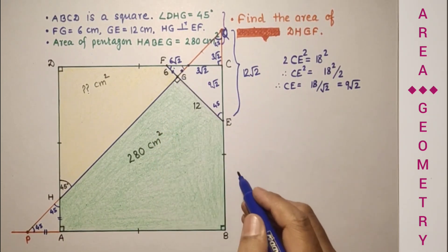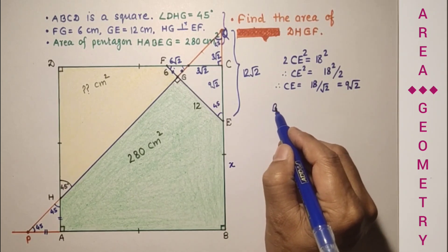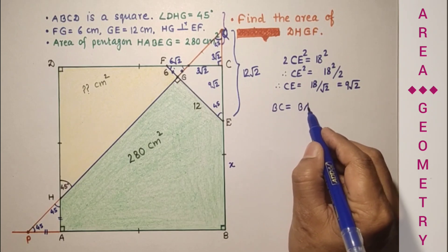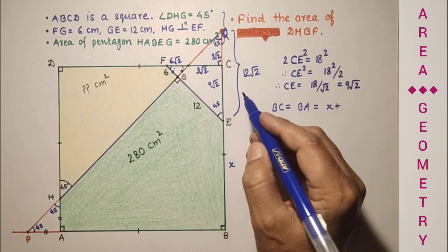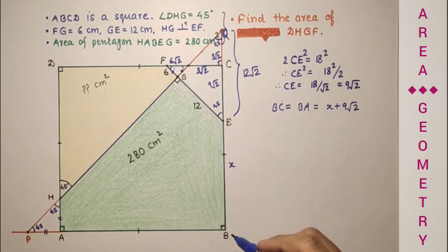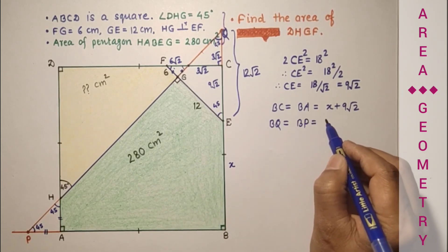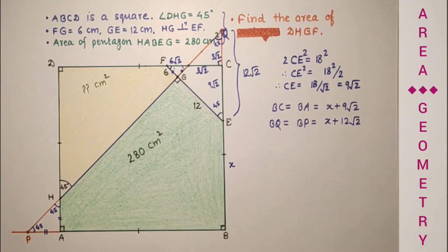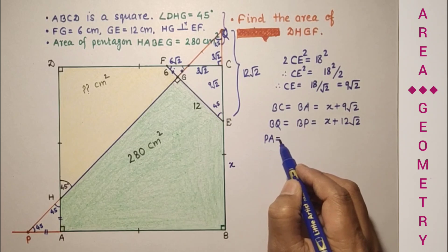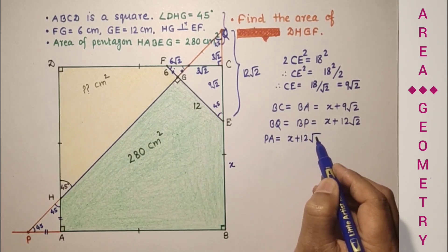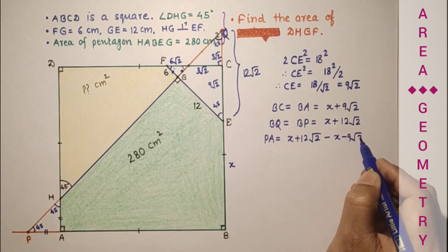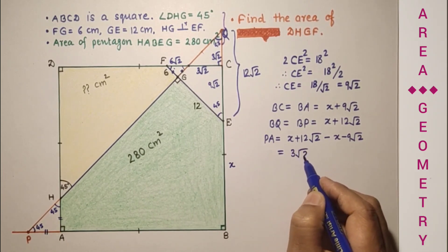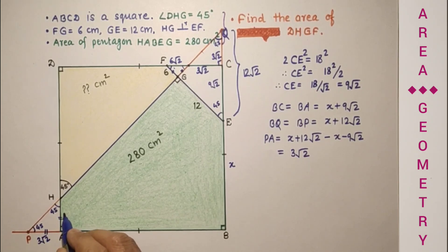The diagram is not drawn to scale. This is 6 root 2. Let us suppose this length EB is X. So BC is equal to BA, which is equal to BE plus EC, which is X plus EC is 9 root 2. And BQ is equal to BP, that is equal to X plus 12 root 2. So PA will be X plus 12 root 2 minus BA, which is X minus 9 root 2. That is 3 root 2.